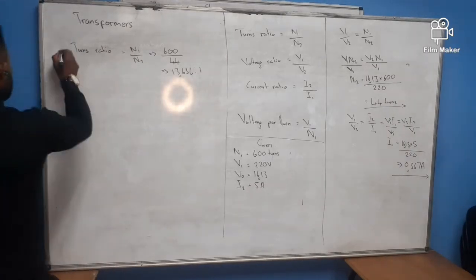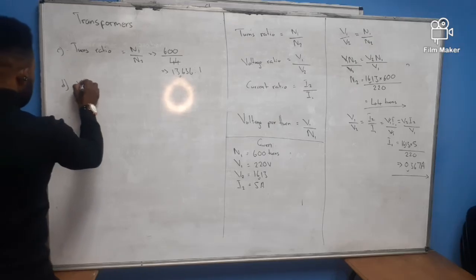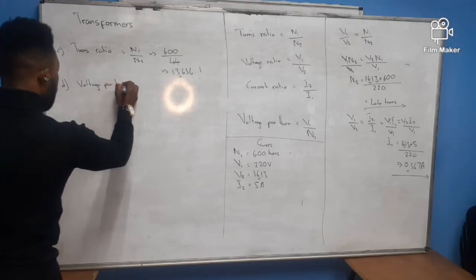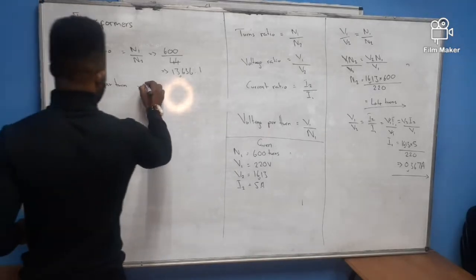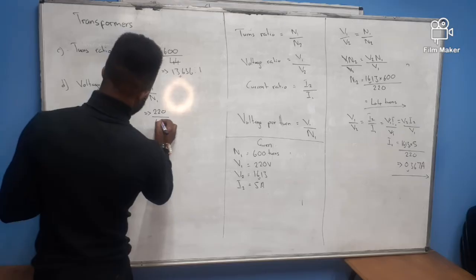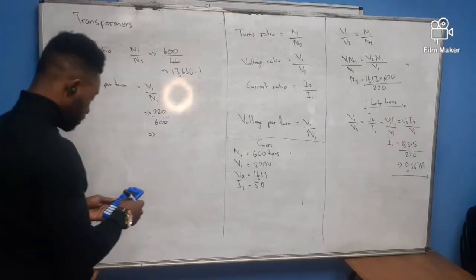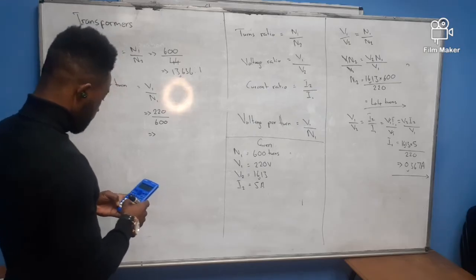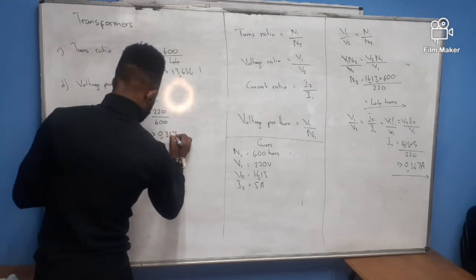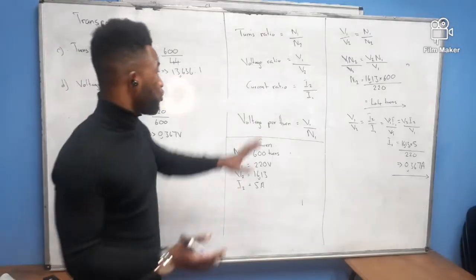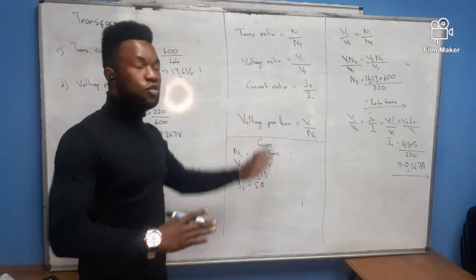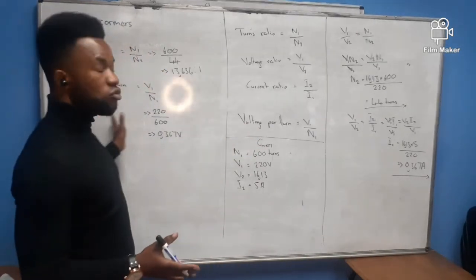Part D asks for the voltage per turn. The formula is V1 over N1: 220 divided by 600 gives 0.367 volts per turn. So, you just need to know your transformer equation and use it to calculate the turns ratio, voltage ratio, current ratio, and voltage per turn — the formula is also on your formula sheet.